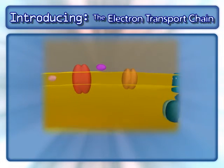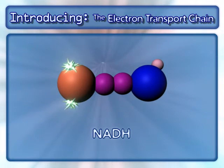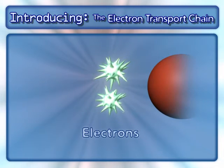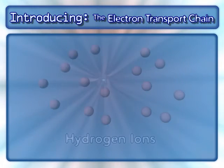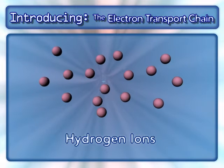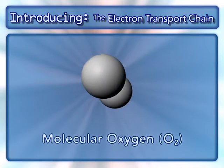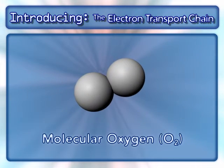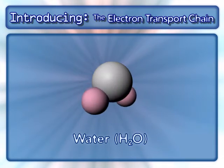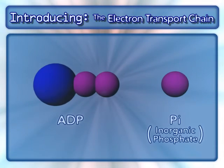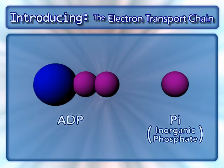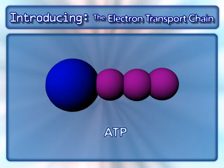Other key components in this process are NADH and the electrons from it, hydrogen ions, molecular oxygen, water, and ADP and inorganic phosphate, which combine to form ATP.